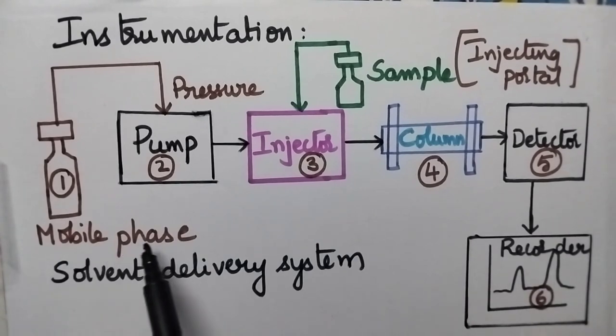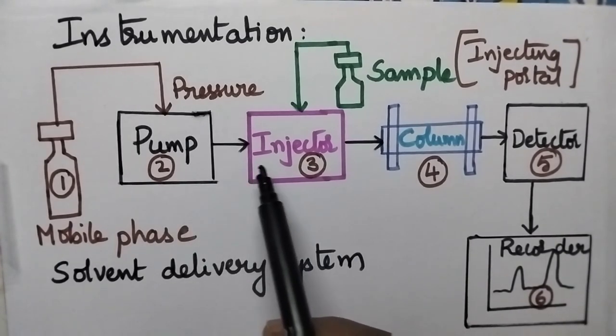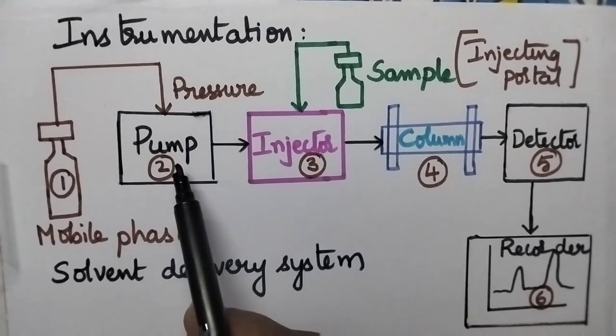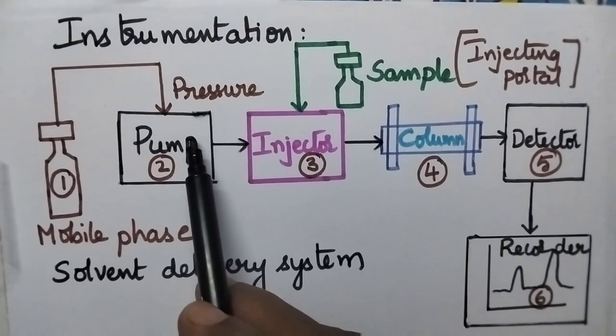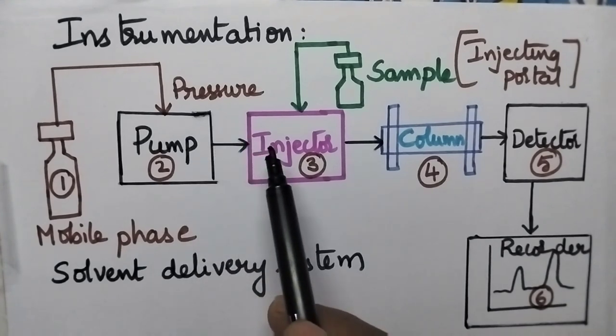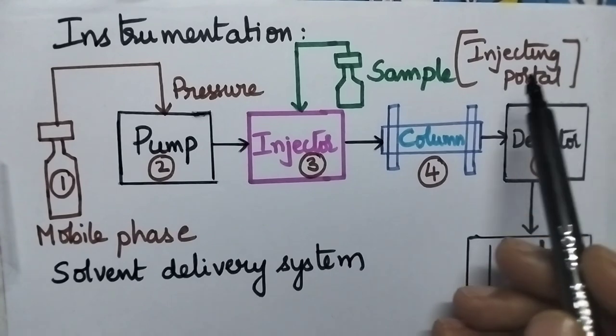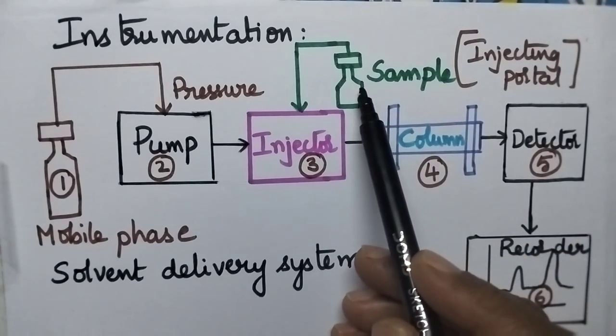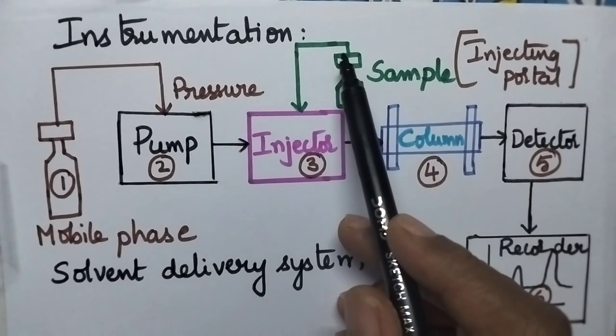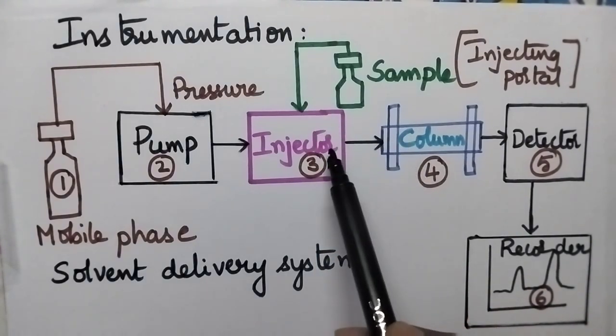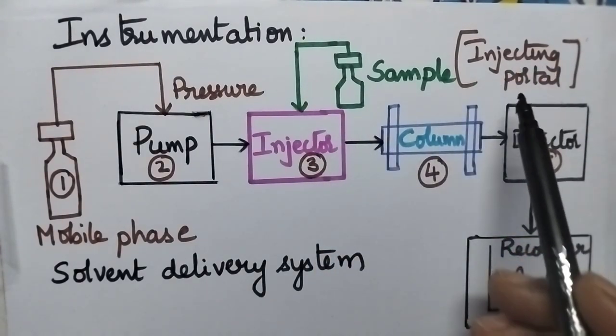Initially the mobile phase is injected into the column with the help of a pump which is maintained at high pressure for better resolution. The sample is injected into the column with the help of an injecting portal.